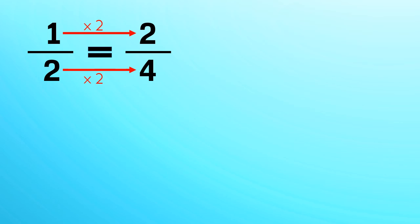Let's see an example. We have a fraction 1 by 2. Now if we multiply both numerator and denominator by 2 we get 2 by 4. So the value of 2 by 4 is equal to value of 1 by 2.